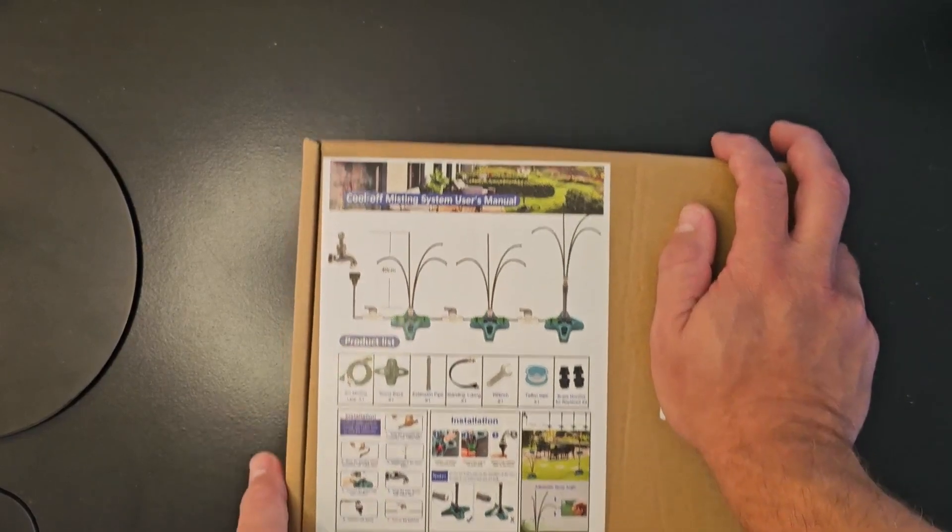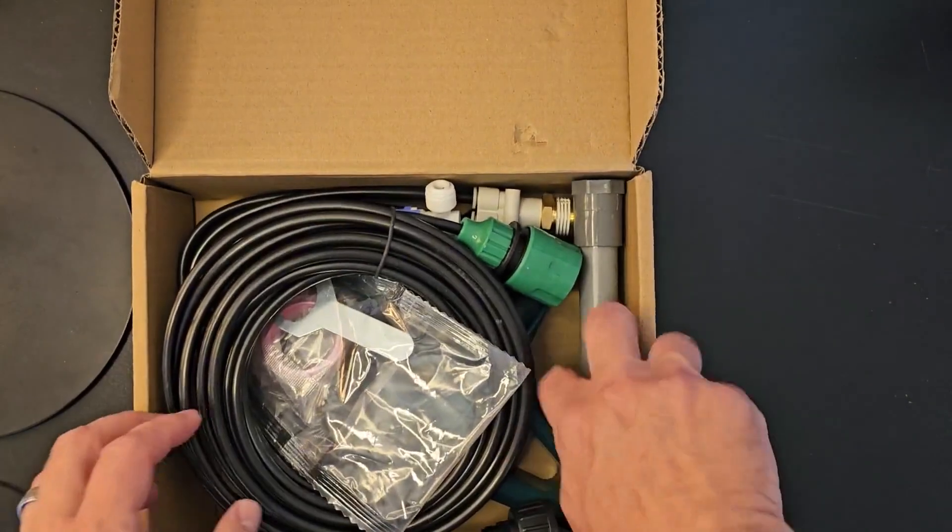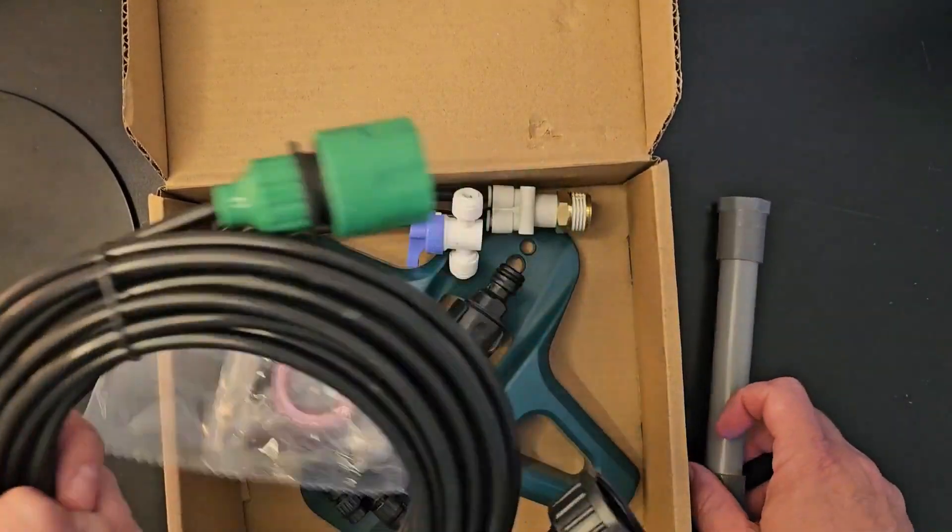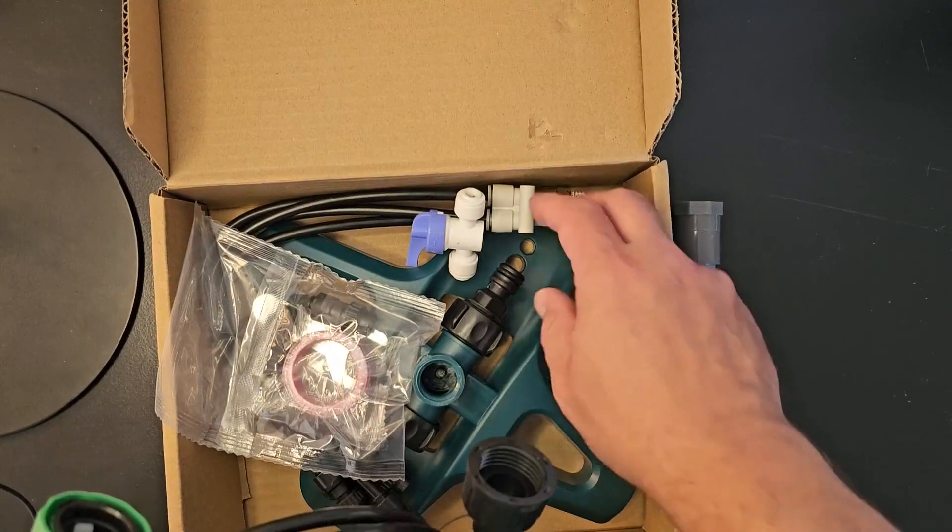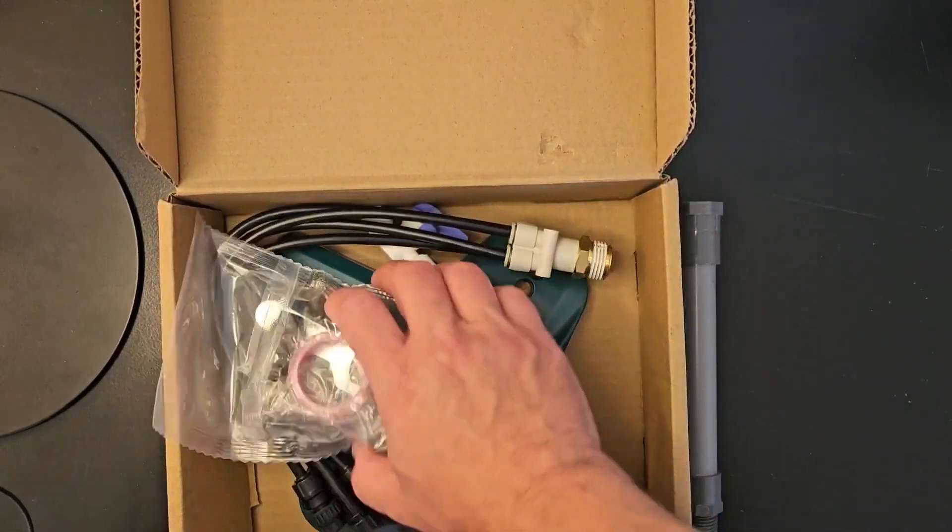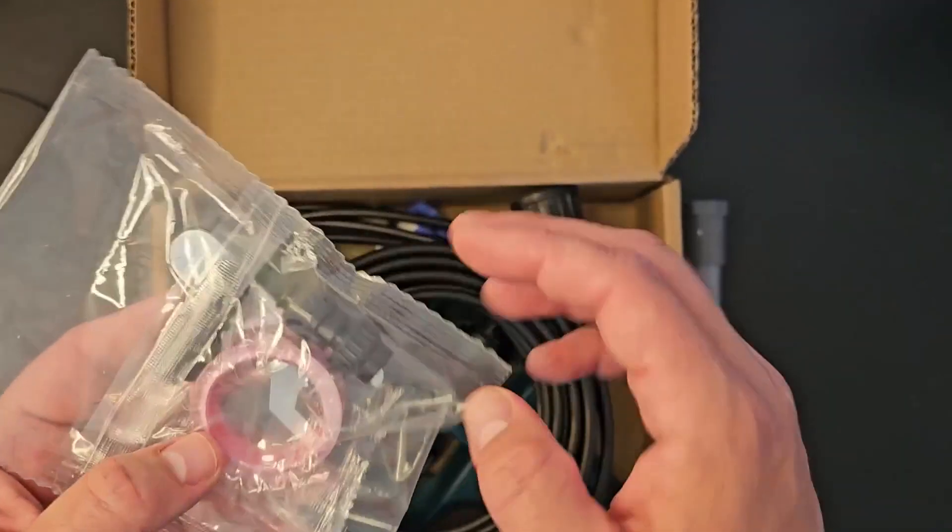So we'll go ahead and open the box and show you what's inside. Here's your extension tube. This is where your tube connects to your faucet and then into all your connections here. And then here's all your other accessories to help put it together.